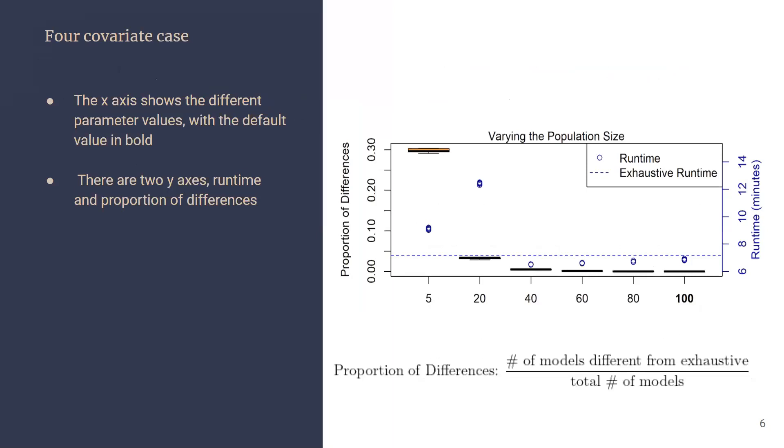Here the x-axis shows the different parameter values for population size with the default value in bold. There are two y-axes: runtime and proportion of differences. Runtime shows the exhaustive runtime in the dashed line and the circles represent the runtime for that specific value of population size.